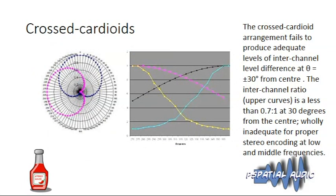Now we look at Cross Fours. Crossed cardioids are often used for stereo recordings rather than crossed figure-of-eights because they have a suppressed rear lobe, meaning they pick up less ambient sound and can be positioned further from the ensemble — giving better blend. But the problem is that cross cardioids don't provide enough inter-channel level differences, especially not at LF, as shown in the graph. The maximum inter-channel difference from a cardioid is only about 3 dB — nowhere near enough for proper stereo.